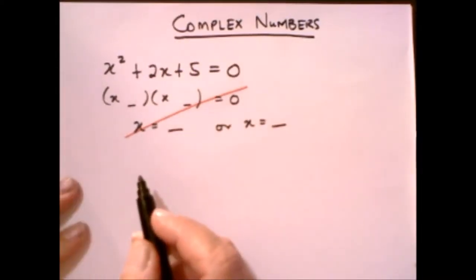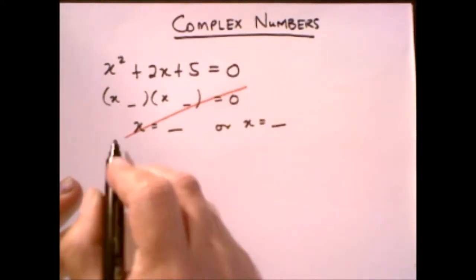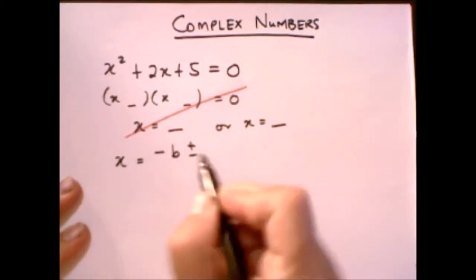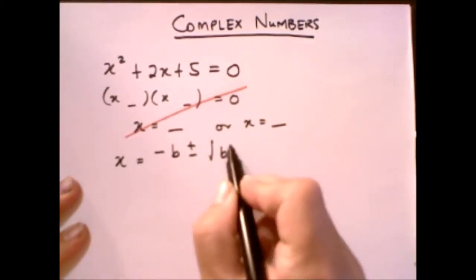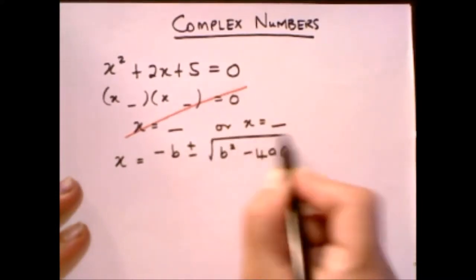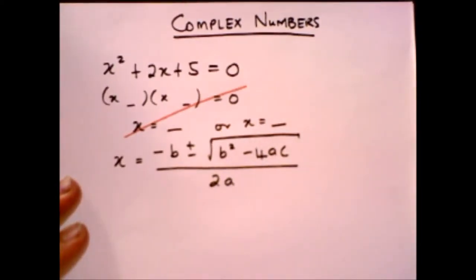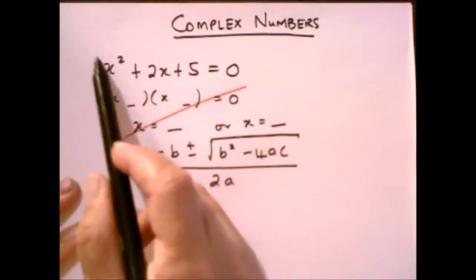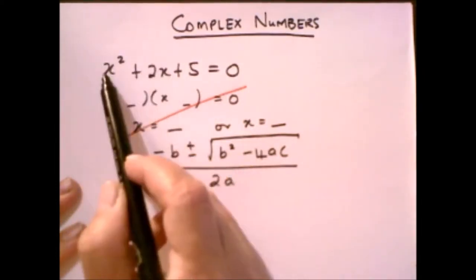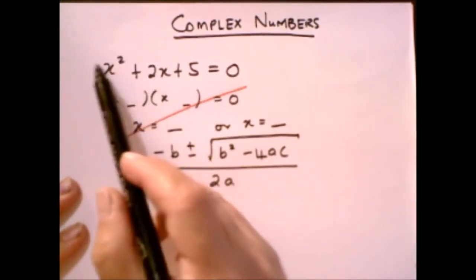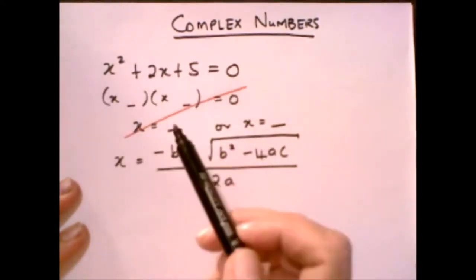The other method you can use is to look at the quadratic formula, which says that the root equals minus b plus minus square root of b squared minus 4ac, everything over 2a. The values for b, a, and c would be the numerical coefficients of these terms here. So b is going to be 2, a will be 1, and c is going to be 5.